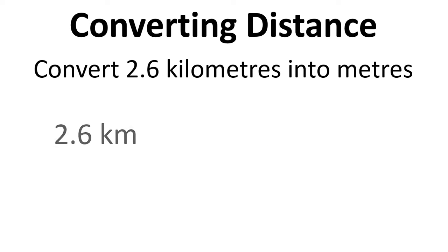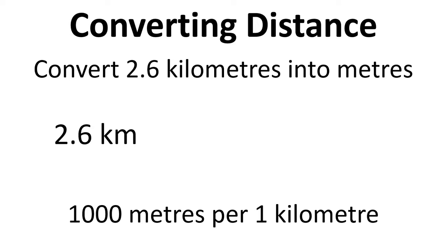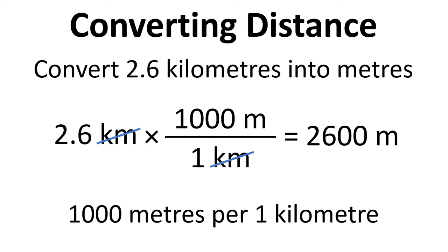Here's another simple example, 2.6 kilometres converted into metres. Well we know there's 1,000 metres per kilometre, so we write times by 1,000 metres divided by 1 kilometre. The kilometres cancel out, and we end up with 2,600 metres.